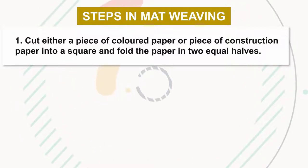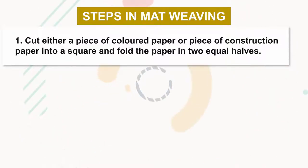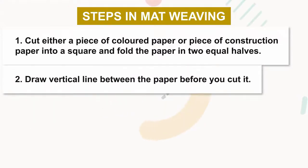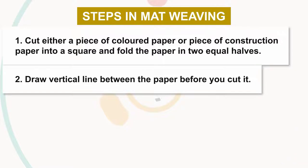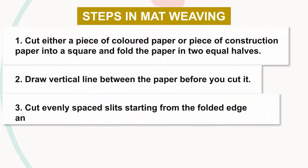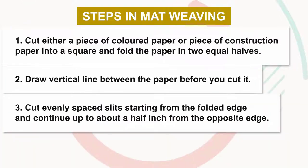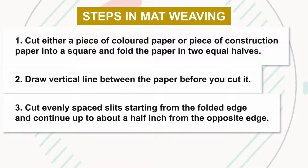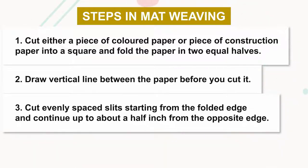Step two: draw a vertical line between the paper before you cut. Step three: cut evenly spaced slits starting from the folded edge and continue up to about a half inch from the opposite edge.